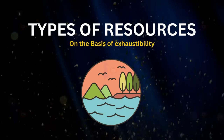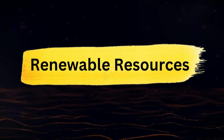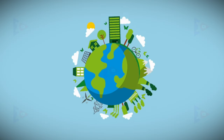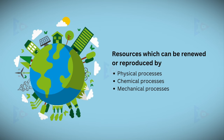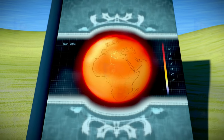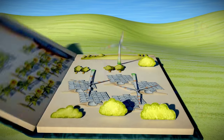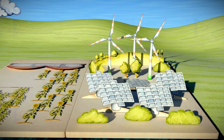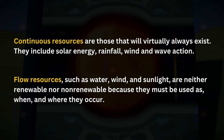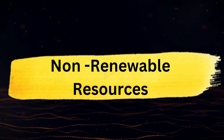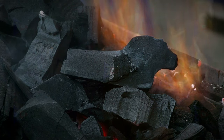On the basis of exhaustibility: renewable resources are those which can be renewed or reproduced by physical, chemical or mechanical processes, such as solar energy, wind energy, water, forests and wildlife. They may be further divided into continuous or flow resources. Non-renewable resources occur over a very long geological time; minerals and fossil fuels are examples of such resources.